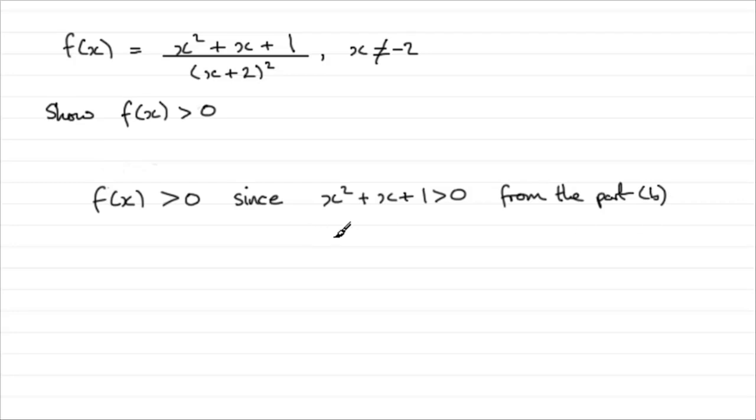And we know that x plus 2, all squared, is greater than zero since it is a squared term.